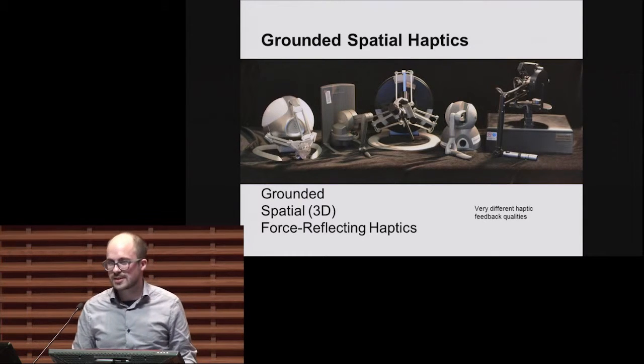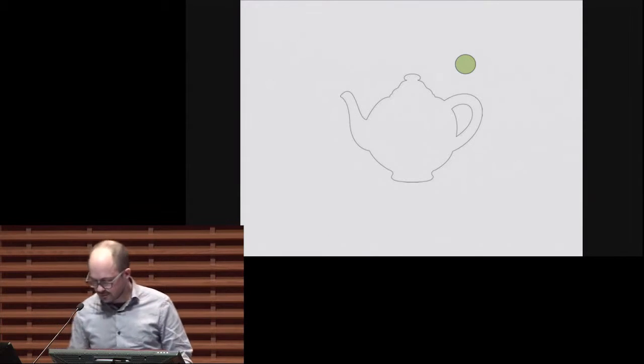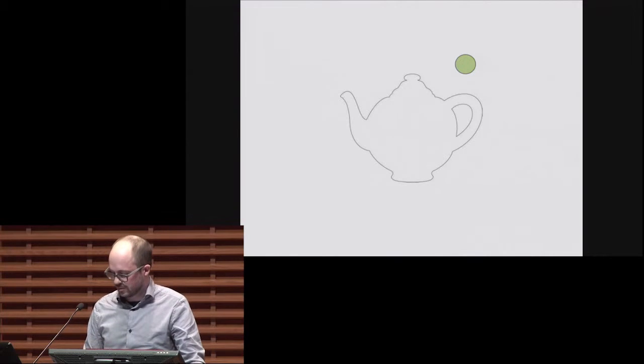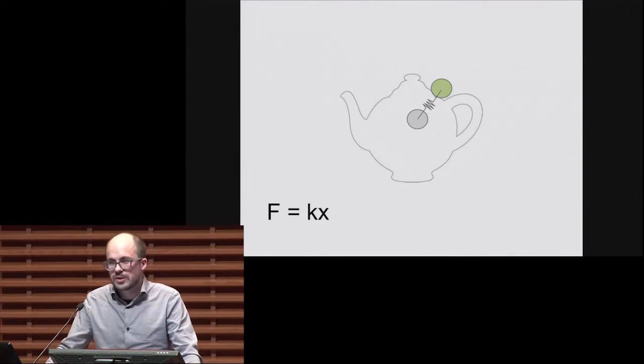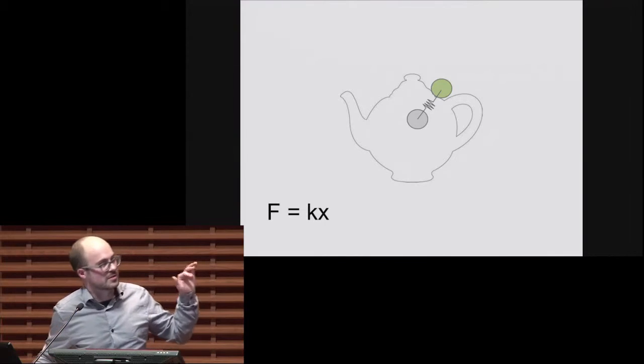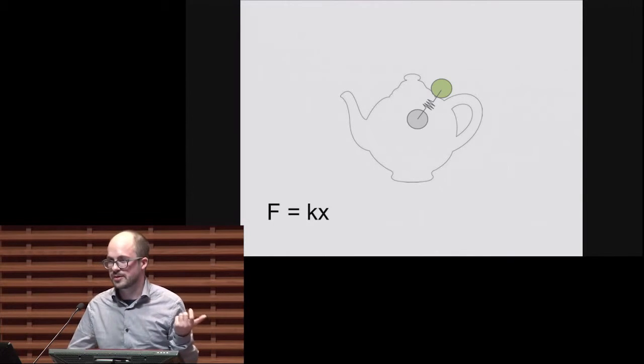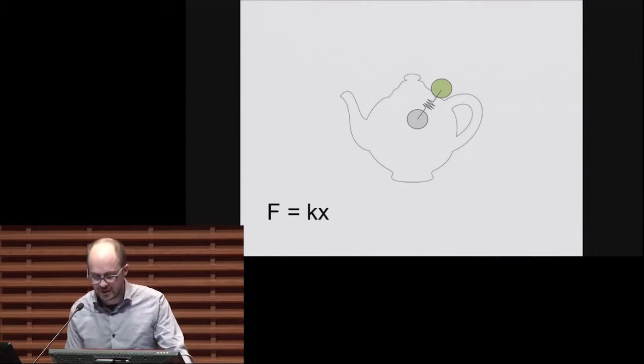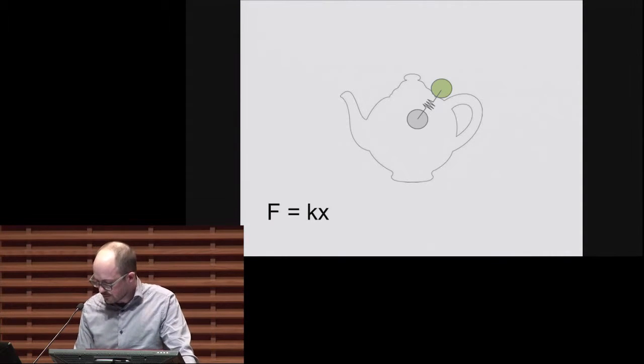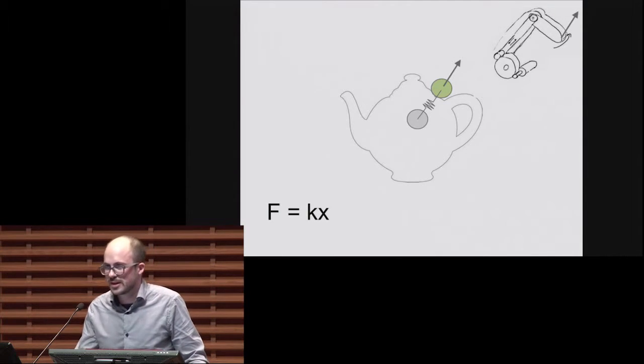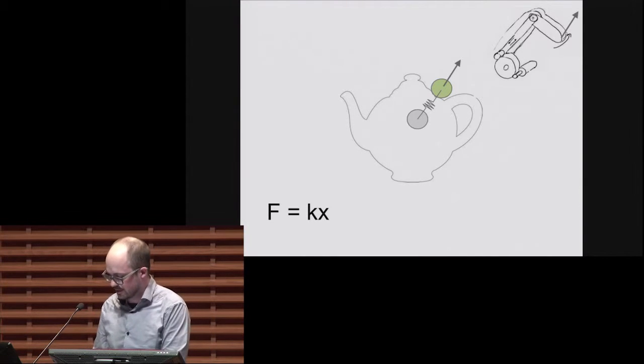So here we are rendering a teapot. And the avatar follows the device manipulandum position as we approach the teapot. And as we come in contact with it, we maintain the avatar visually on the surface and then let the manipulandum penetrate the surface. And then we attach a virtual spring between these two. And the force is proportional to the distance between them. And this force is displayed to the user through the linked mechanism, through the motor here, and displayed at the tip of the instrument.